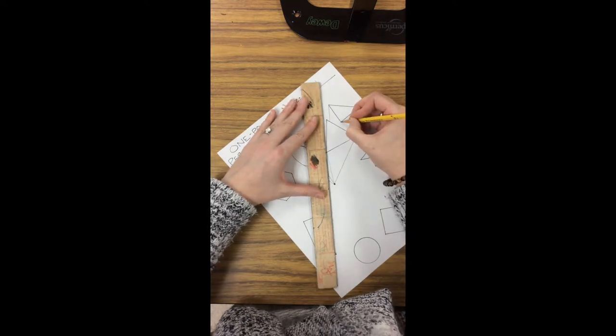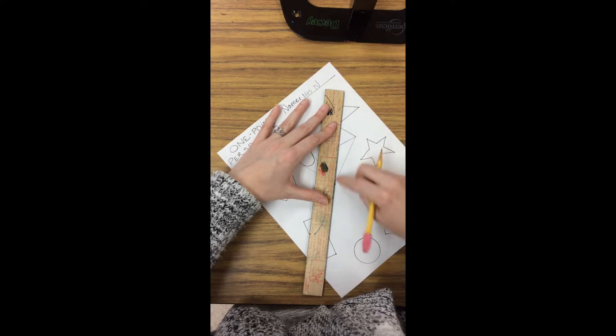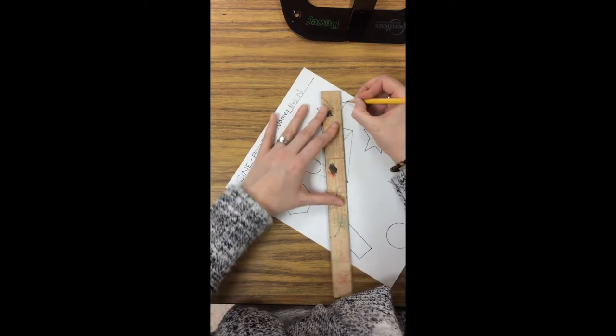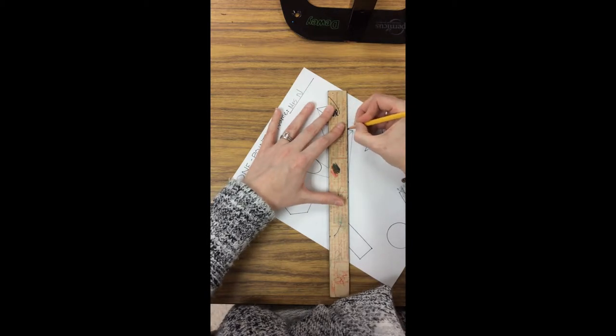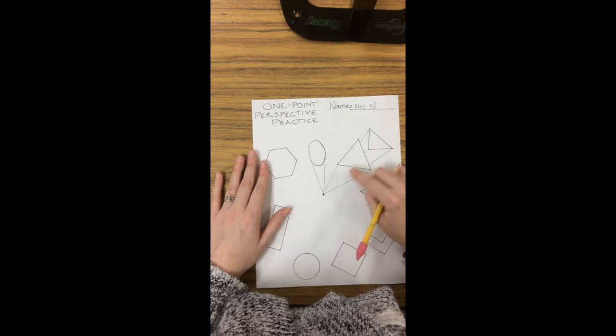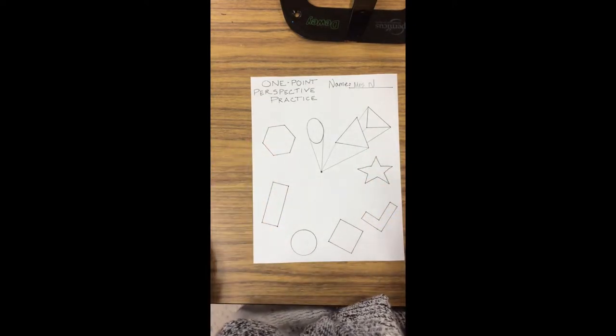So again, I'm lining up my corner with the vanishing point, but I'm drawing my line until I hit this shape and stop. So now it looks like this shape is behind this one because they are overlapping. One is in front of the other.